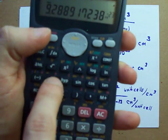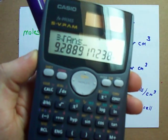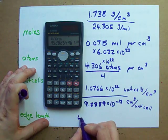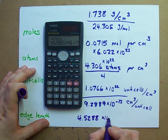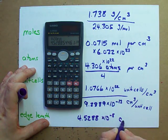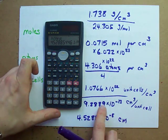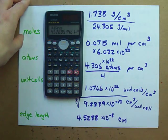Actually, the cube root of that number is this. I get 4.5288 times 10 to the negative 8. And now that's in centimeters. So cube root of the volume of one unit cell will give its edge length. And that's my edge length.